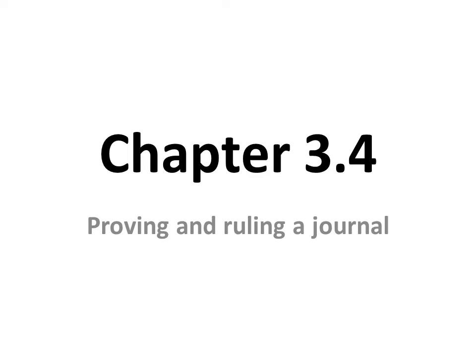Chapter 3.4 is about proving and ruling a journal. Proving and ruling a journal are going to be done multiple times throughout the fiscal period. It's really important because proving and ruling basically give us mathematical proof that we're doing things correctly and we're on track.